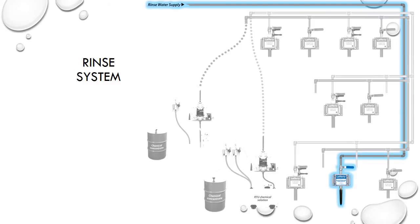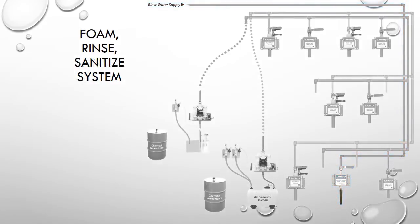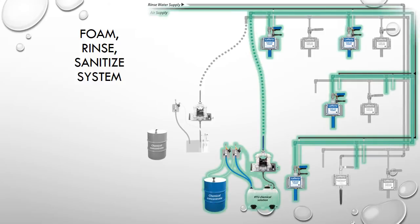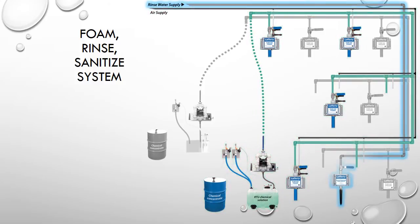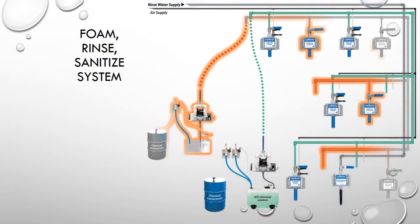The water supply piping is planned and installed separately by the customer. In review, we have now shown one way for structuring a comprehensive central system, which is really made up of three separate systems for cleaning, rinsing, and sanitizing.